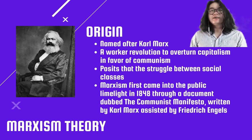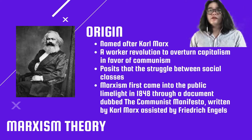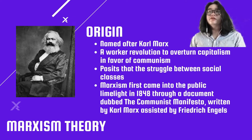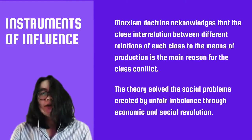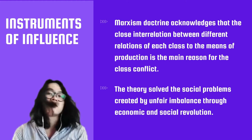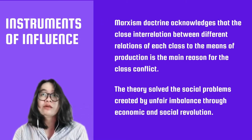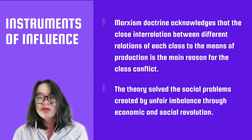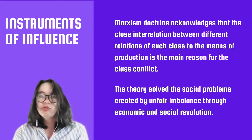Thank you for the brief introduction. Now I would like to move on to our first theory, which is Marxism theory. It is a theory named after Karl Marx himself, where a worker revolution sought to overturn capitalism in favor of communism. Marxism first came into the public limelight in 1848 through a document dubbed The Communist Manifesto, written by Karl Marx and assisted by Friedrich Engels. The first instrument of influence is the Marxism doctrine, which states that the close interrelation between different relations of each class to the means of production is the main reason for class conflict. The second is that the theory solves social problems created by unfair imbalance through economic and social revolution.